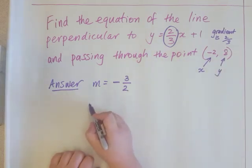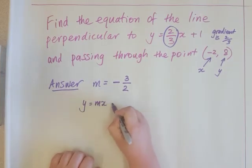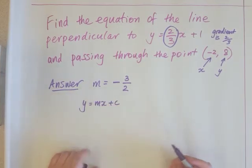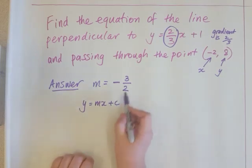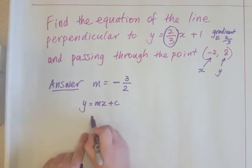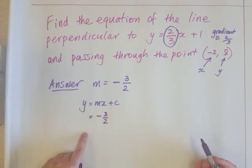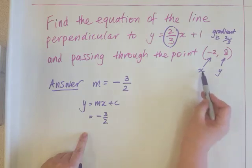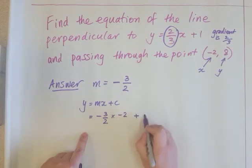We're going to write down our equation of a straight line. We know that y equals mx plus c. And now we put the values of m, x and y. We know m, it's negative three over two. We're going to multiply it by x, which is negative two.